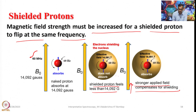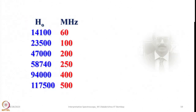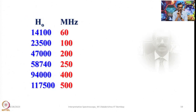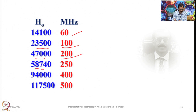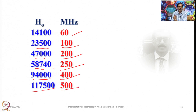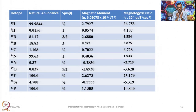The Larmor frequency corresponds to different field strengths. For proton: at 14,100 gauss it is 60 megahertz; at 23,500 gauss it is 100 megahertz; at 47,000 gauss it is 200 megahertz; at 58,700 gauss it is 250 megahertz; at 94,000 gauss it is 400 megahertz; and at 117,500 gauss it is 500 megahertz. This slide shows the different field strengths and corresponding Larmor frequencies.